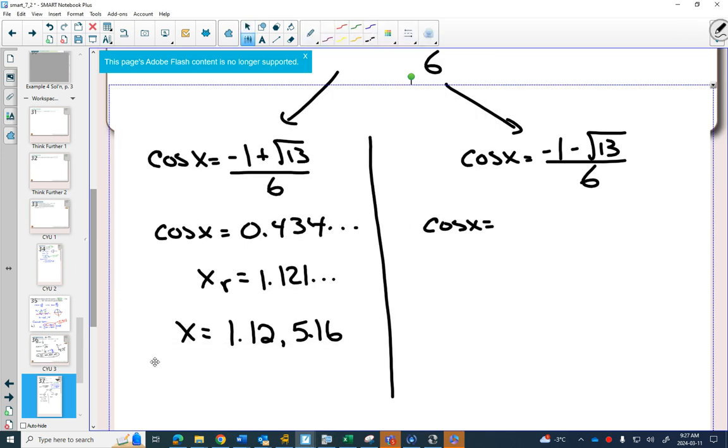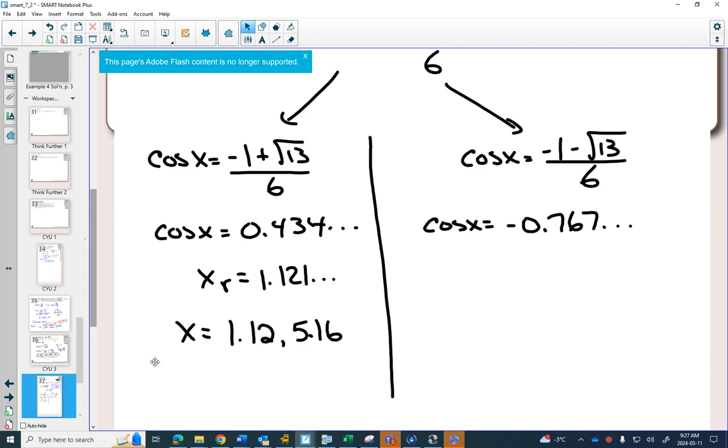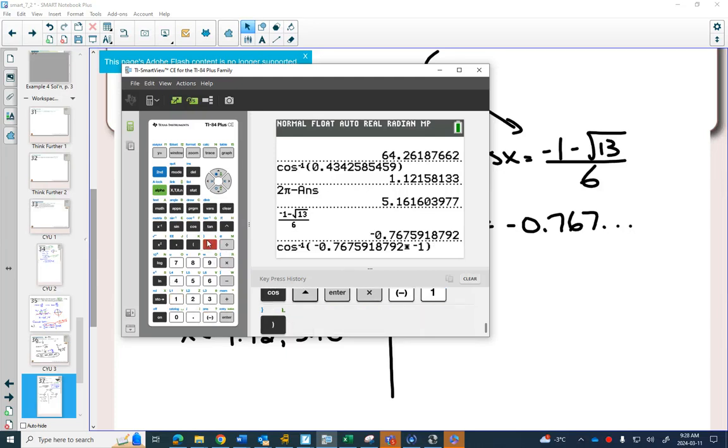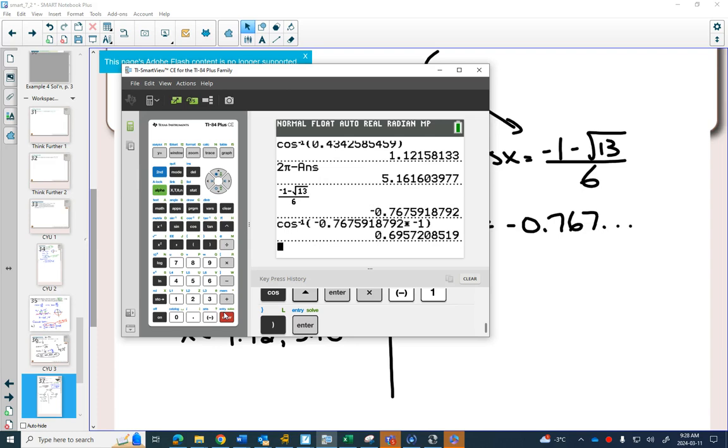And so when I find my reference angle, I have to take cos inverse of the positive value. So what I do in this situation, because if I take this answer from the previous one, it's negative, I can multiply it by -1 to make it positive. So my reference angle is 0.695.